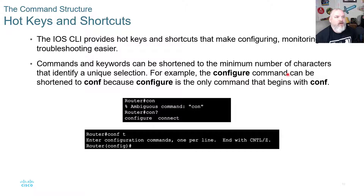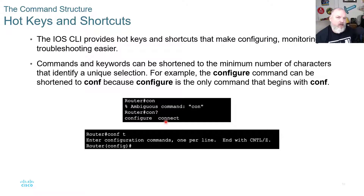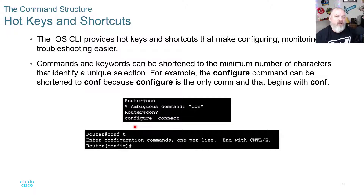The IOS command line provides hotkeys and shortcuts. For example, 'configure' can be shortened to 'conf' because it's a unique prefix — but 'con' is ambiguous since both 'configure' and 'connect' start with 'con'. Once you use a unique prefix like 'conf', the IOS knows which command you mean. Learning these shortcuts saves time, especially during certification exams or when you need to work quickly setting up routers and switches.